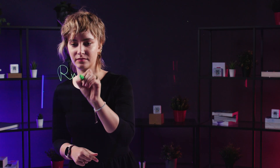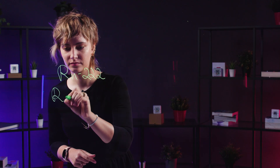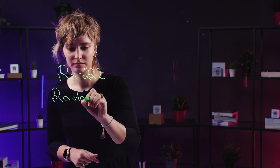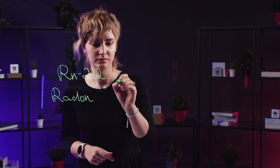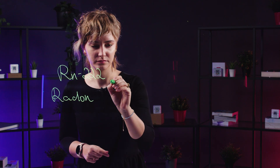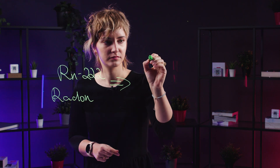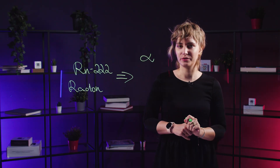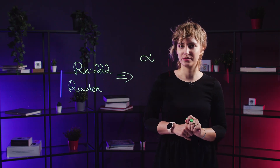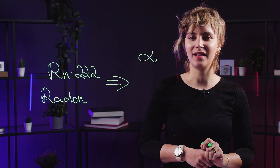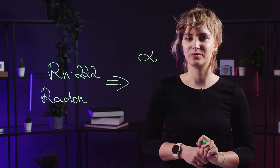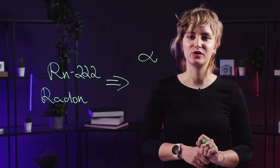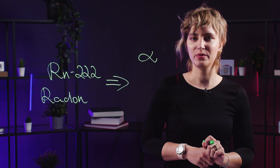Not all isotopes are stable — some are radioactive. When radon decays, it undergoes alpha decay, releasing an alpha particle consisting of two neutrons and two protons. This process alters the radon atom's nucleus, transforming it into a new element.